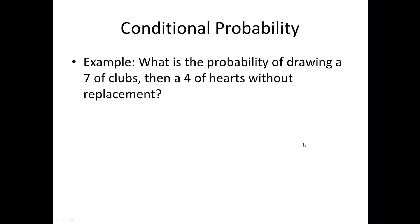This is a classic example of a conditional situation. What's the probability of drawing a seven of clubs, then a four of hearts, without replacement? The without replacement part matters: when you start with a regular deck you have 52 cards, two colors, four suits, 13 cards per suit. If you pull out a seven of clubs and don't put it back, you go from 52 cards to 51 — you have one less club, one less seven.